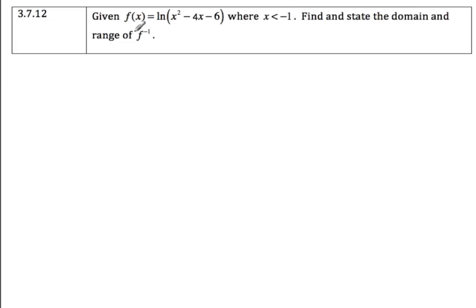Find and state the domain and range of f inverse. So let's first find f inverse, switch x and y, and then take e to both sides, so then we're left with e to the x equals y squared minus 4y minus 6.